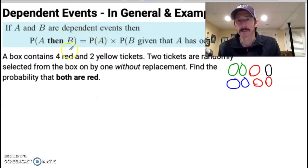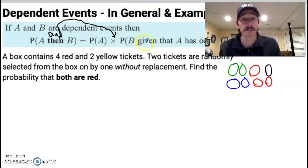So if events are dependent, the probability that they happen, the word then is still in there. It still means probability of A and then B happening. So there's still a word and in here. So we're still allowed to multiply, but the probability of B happening is conditional, and we're going to get into conditional later. So the probability of B happening is the probability that B happened given that A has already occurred.